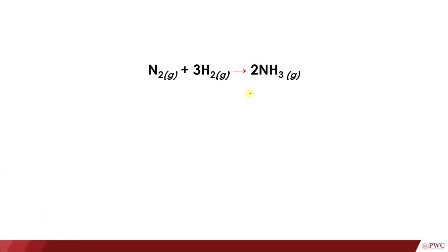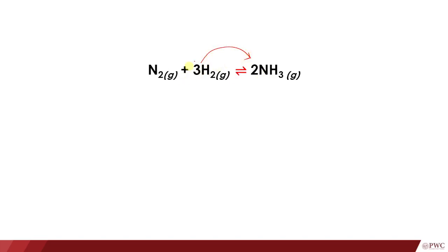We can make ammonia from nitrogen gas and hydrogen gas. But there's a problem: ammonia, if left in a container, also returns back to form N2 and H2. So this is actually a reversible reaction, emphasized by this symbol. There is a forward reaction and also a reverse reaction, both going on at the same time.